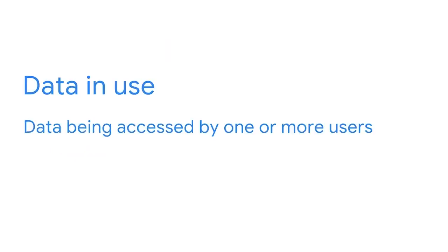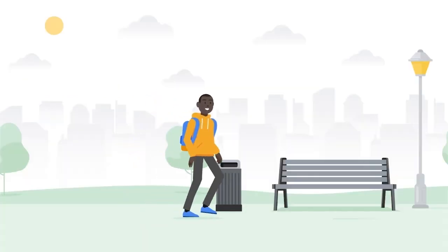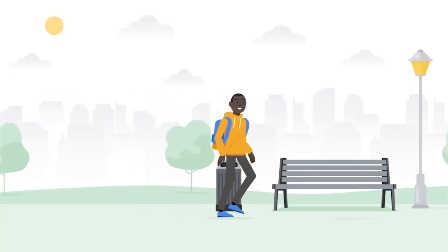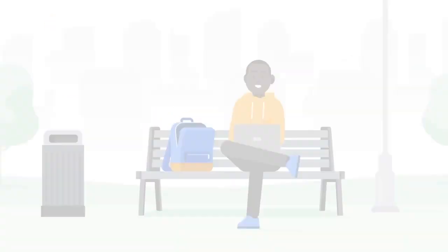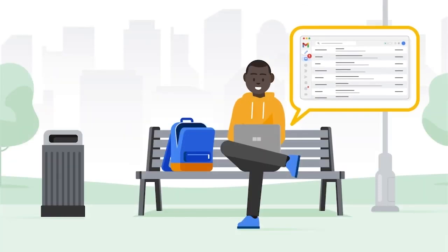Data in use is data being accessed by one or more users. Imagine being at a park with your laptop on a nice sunny day — you stop at a bench to check your email. This is an example of data in use. As soon as you log in, your inbox is considered to be in use.